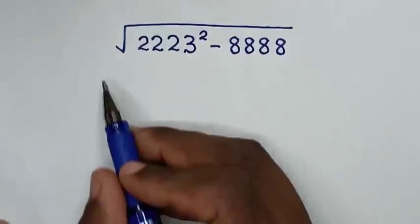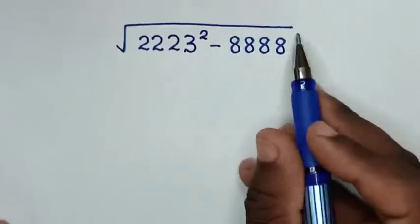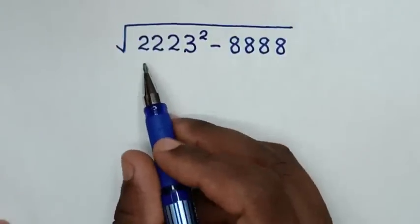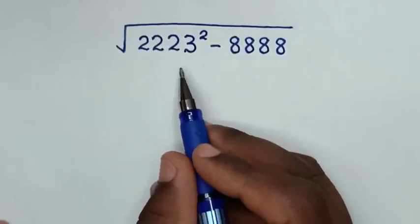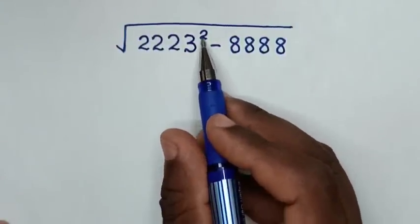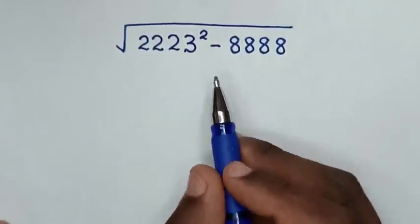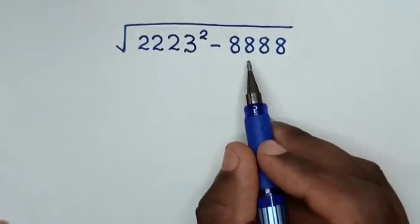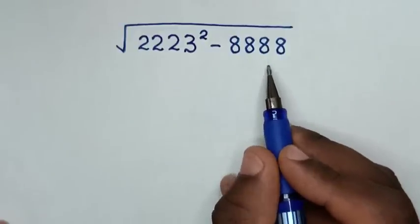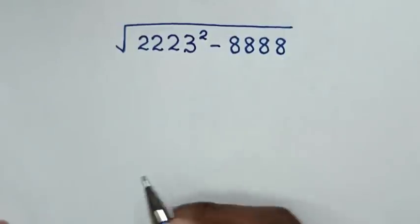Hello! How to solve square root of 2223 squared minus 8888?